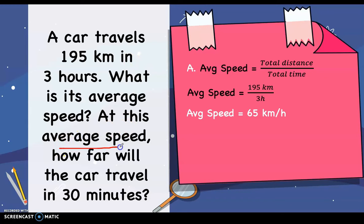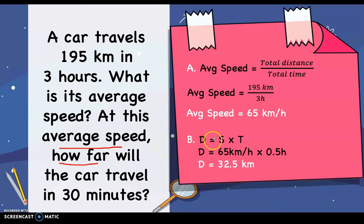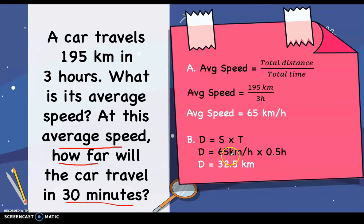At the average speed of 65 kilometers per hour, to find the distance, we use: distance equals speed times time. The speed is 65 kilometers per hour and the time is 30 minutes, which we convert to 0.5 hours. Multiplying 65 times 0.5 gives 32.5, and since kilometers per hour times hour cancels the hour unit, our answer is 32.5 kilometers.